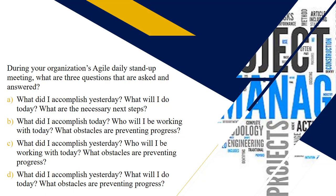Now we're going to talk a little about Agile. During your organization's Agile daily stand-up meeting, what are the three questions that are asked and answered? After looking at all of the options, you should have selected the last one, choice D. The three questions asked and answered are: what did I accomplish yesterday? What will I do today? And what obstacles are preventing progress? These are the three questions asked during the stand-up or scrum meetings.